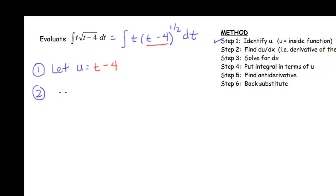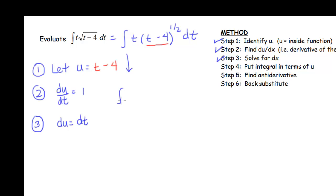Step 2, we're going to find du/dt. The derivative of our u is going to be just 1. Step 3, we're going to solve for dt. If you multiply both sides by dt, you get du equals dt. So those first three steps are now done — they were pretty easy. Now let's start working on step 4. When we go to put this in terms of u, the t just stays there. I have u to the 1/2 power, and then dt is just du.